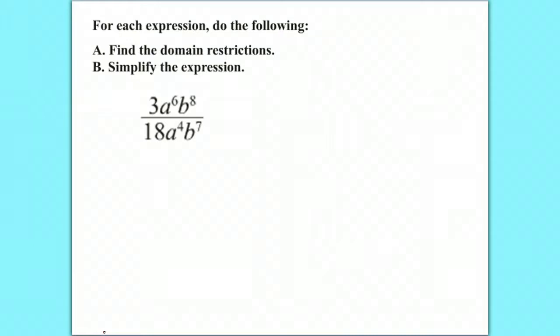A rational expression is basically a fraction, and if you remember back to fractions, you never want zero in your denominator. That's what we call undefined in math. So if you had five divided by zero, you could put that in your calculator and you'll see it'll say error. So we want to find out where this denominator equals zero, because that is what we're going to restrict. It cannot equal zero.